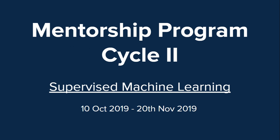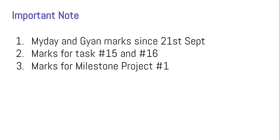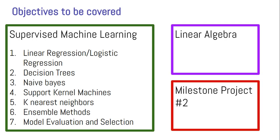I'm going to discuss the entire plan for the next 40 days. Before starting cycle 2, there are some pending things from cycle 1. From 21st September onwards, all my day entries and gyaan entries that you have done will be scored and added to this cycle. Second, tasks 15 and 16 have not been evaluated yet — not everyone has submitted — so those marks will also be added to the current cycle. Third, for the milestone project, only one team has submitted so far, so after all submissions, evaluation will happen and those marks will also be added to this cycle.